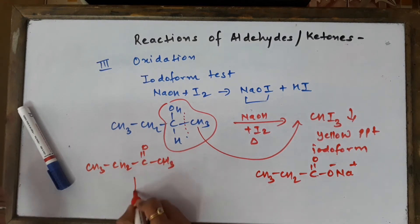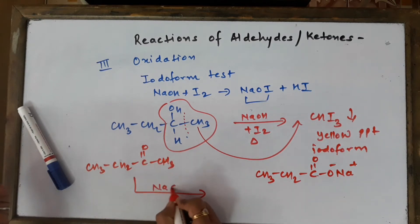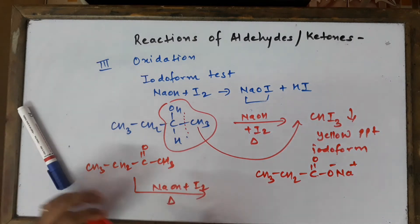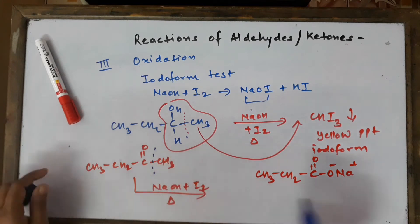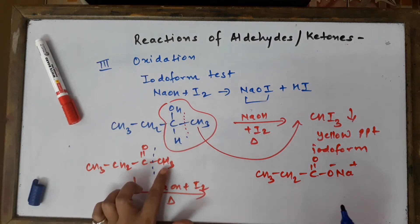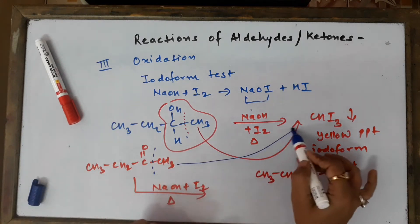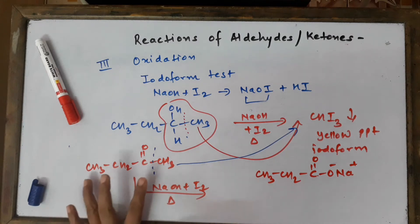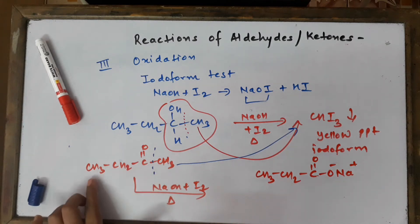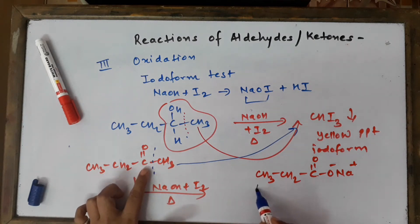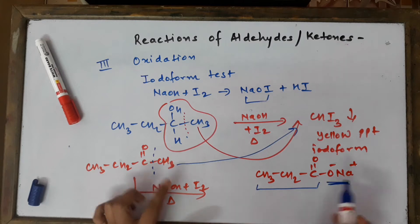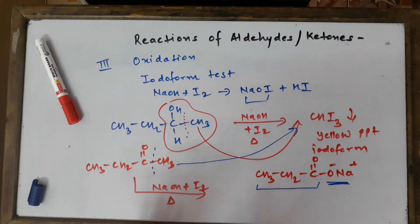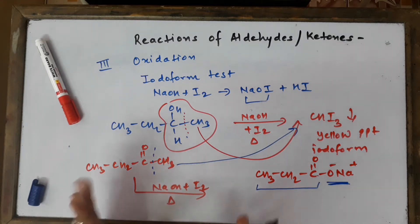Similarly, if we start with CH₃CH₂COCH₃, which is a methyl ketone, and perform the test by heating with sodium hydroxide plus iodine, the same thing happens. The CH₃ gets converted into CHI₃ (iodoform), and the remaining fragment CH₃CH₂CO connects with O⁻Na⁺ to give the sodium salt of the acid.